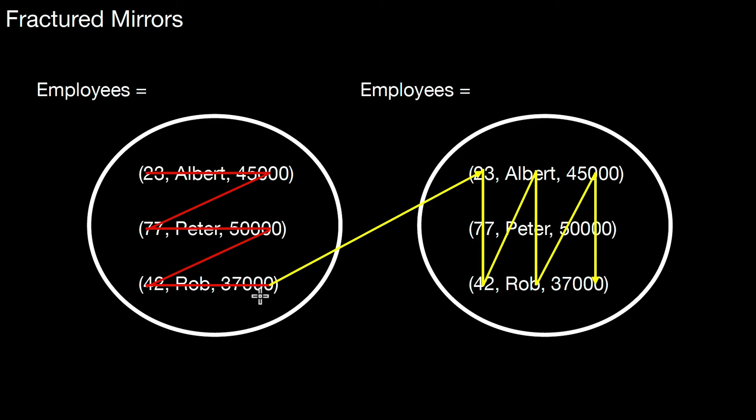If I'm interested in most of the columns, in most of the attributes like in our select star query, well then you can look at this part of the linearization order. If you're interested in something like one attribute, let's say select city code, then maybe it's a better decision to look at this part of the linearization order and just traverse this segment of the curve to obtain all values. So that's a very nice property of fractured mirrors. You have the same data in different layouts and then during query processing you can pick.